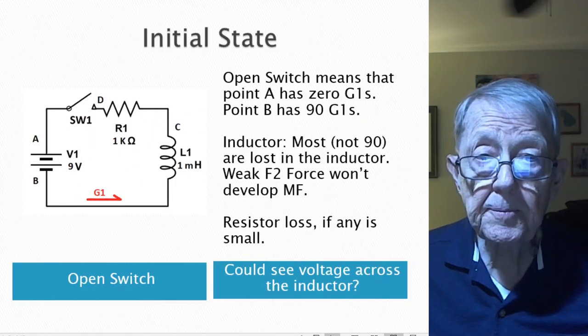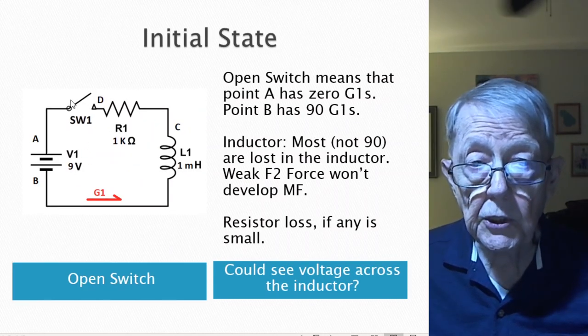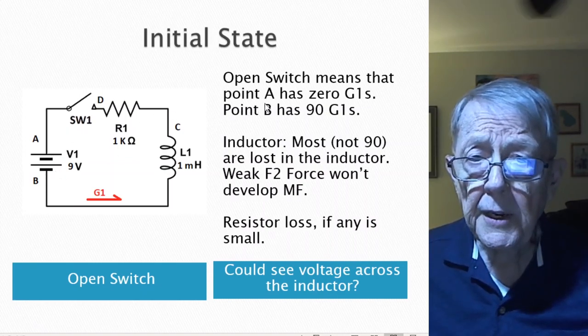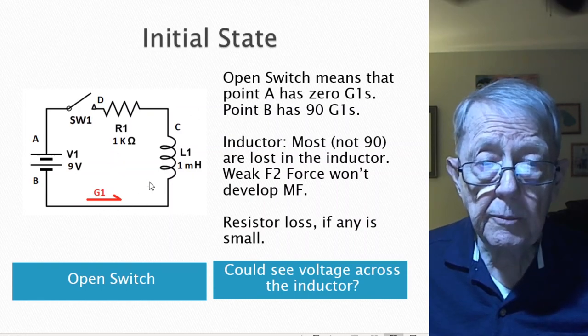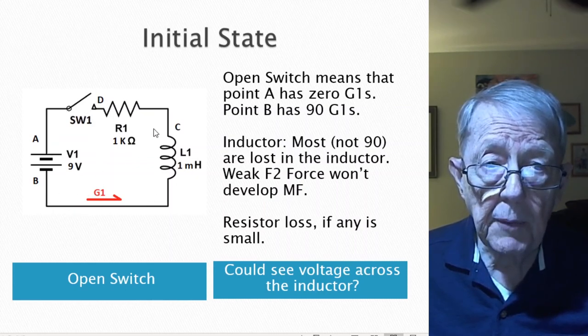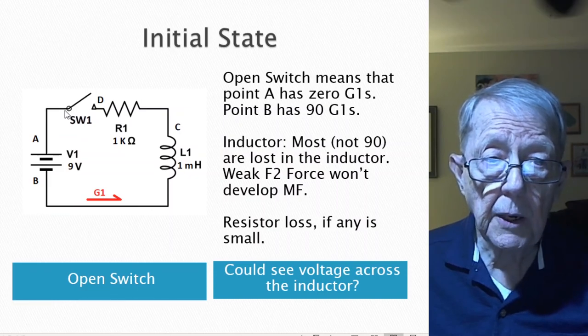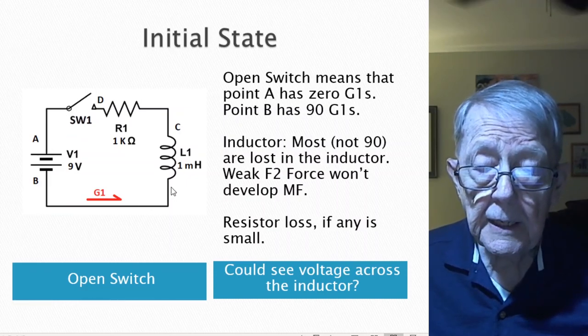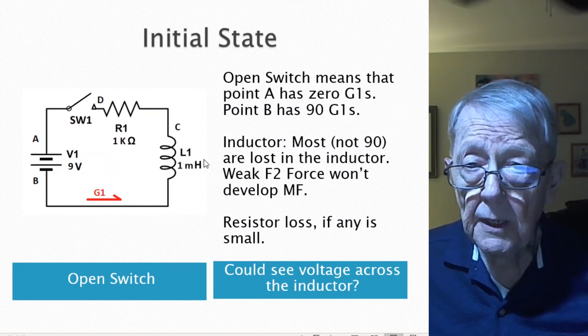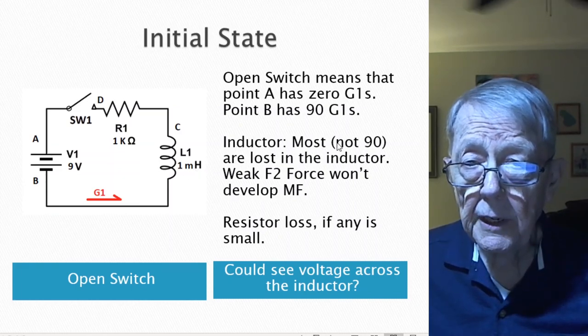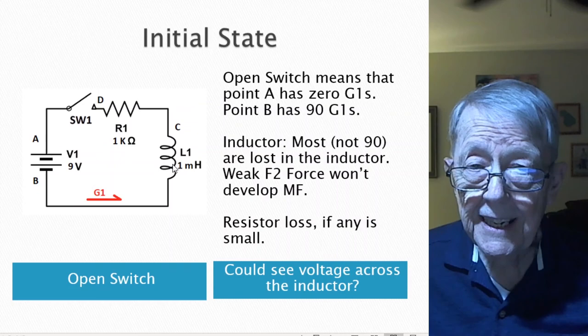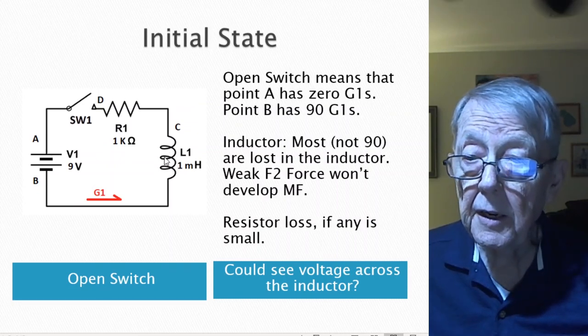So that's the end. Now, we're going to see how we get there. The initial state is with the switch open. There is no magnetic field. Point A has zero G1s. With this open, whatever happened before doesn't matter, because there's nothing, even if there's something coming here, it can't get across the switch. A is zero, B is 90, and now you have a very small amount of G1s flowing through. There's no magnetic field. Most of them are lost in the inductor. I say lost in the sense that they can be stored in the magnetic field or not.